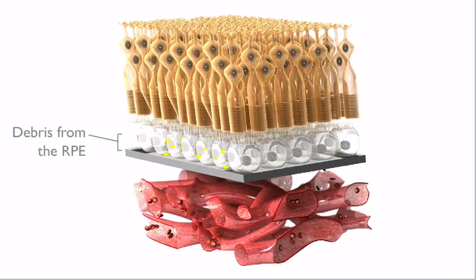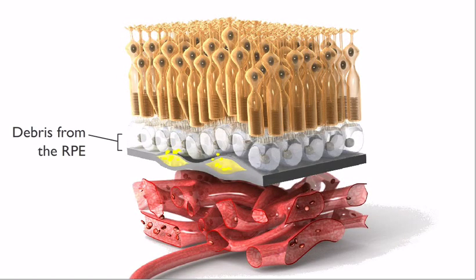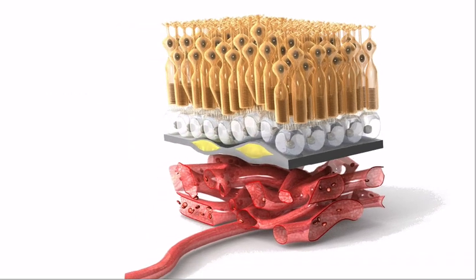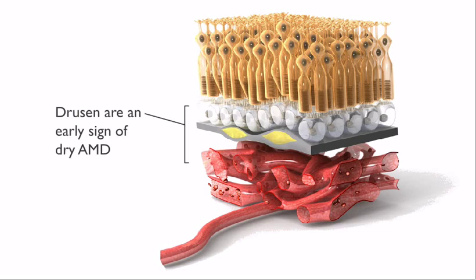As the eye ages, debris from the RPE cell layer and surrounding tissues accumulates above and within the Bruch's membrane. The debris form deposits called drusen. The presence of drusen is usually the first sign of early dry AMD.